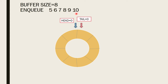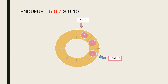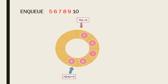We are going to enqueue the values 5, 6, 7, 8, 9, and 10 into the buffer. Initially, the head position equals 0 and the tail position equals 0. After enqueuing each data item, the head is incremented. We enqueue 5 — head becomes 1. We enqueue 6 — head becomes 2. We enqueue 7 — head becomes 3. We enqueue 8 — head becomes 4. We enqueue 9 — head becomes 5. We enqueue 10 — head becomes 6. This is the enqueue process for the circular buffer.